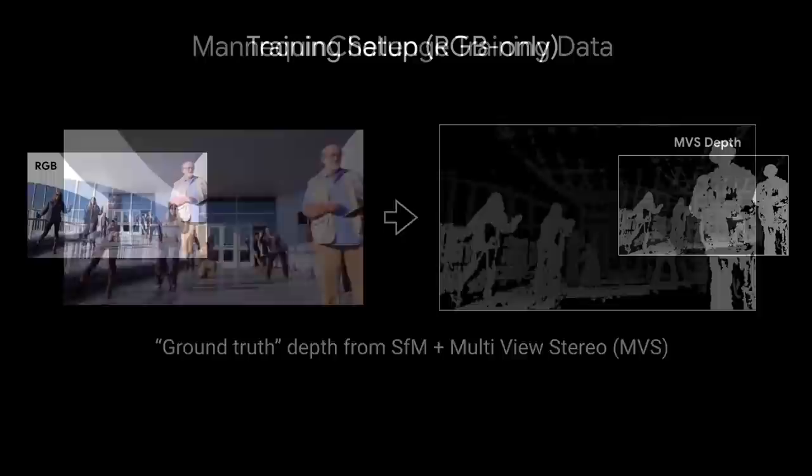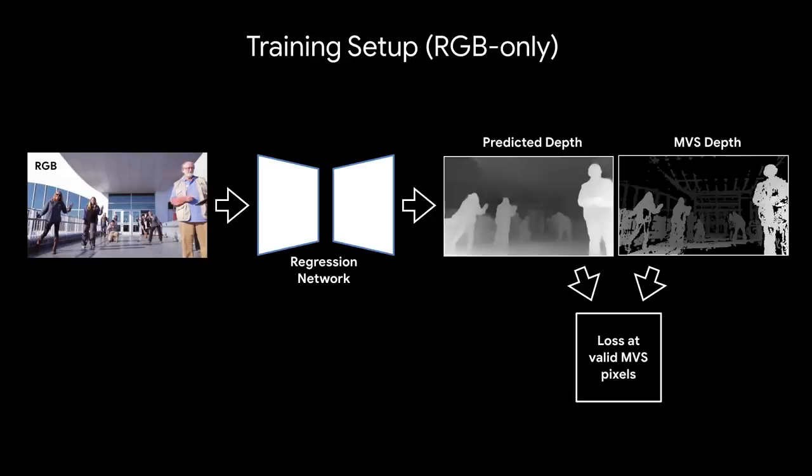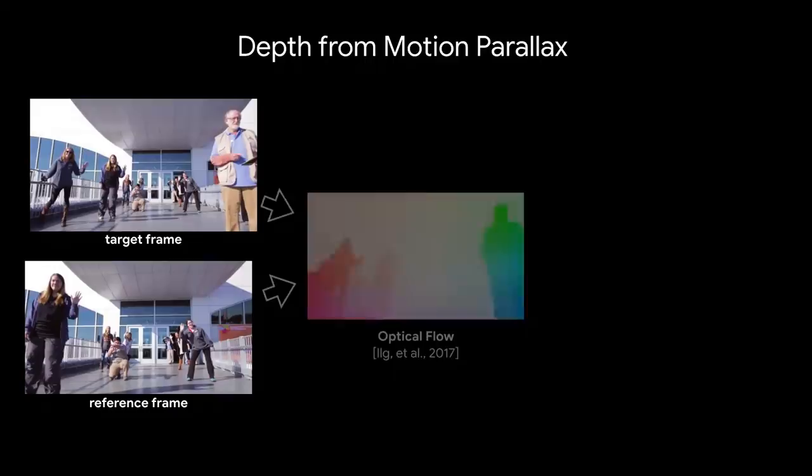In our simplest model, we train our regression network to predict the MVS depth from the input RGB image. We can produce better results by including information from neighboring frames. The challenge is that during training people are stationary, but at inference time they move.